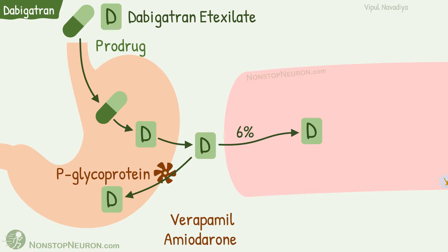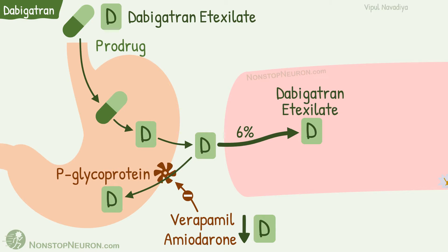Drugs like verapamil, amiodarone, etc. inhibit P-glycoprotein. So this back-secretion is reduced and more dabigatran enters the blood. Therefore, the dose should be reduced in patients taking such drugs.